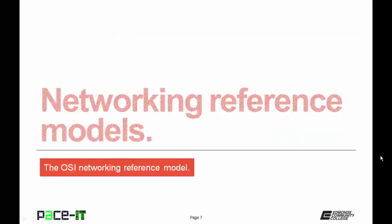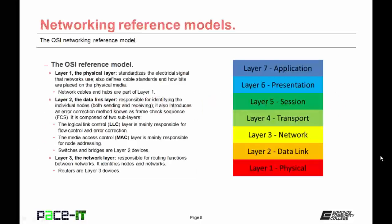Now let's discuss the networking reference models in more detail, beginning with the OSI reference model. It is a seven-layer reference model. Layer one is the physical layer. It standardizes the electrical signals that networks use, defines cable standards, and specifies how bits of data are placed on the physical media.